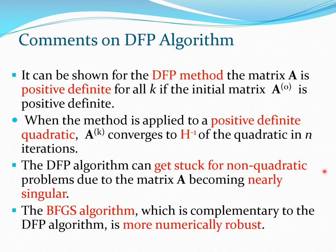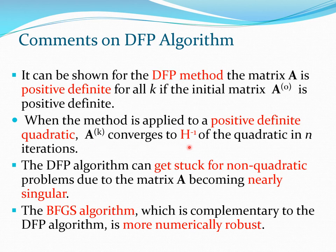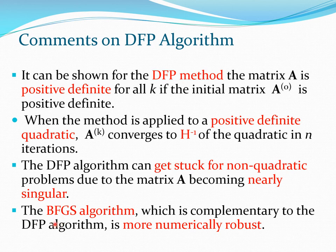For the DFP method, the matrix A remains positive definite for all k if the starting matrix is positive definite — guaranteed by choosing A0 = I. When applied to a positive definite quadratic function, Ak becomes the exact inverse of H at step n. The DFP method can get stuck for non-quadratic functions if A becomes nearly singular. In general, the BFGS method, which is complementary to DFP, is more numerically robust and is theoretically somewhat preferred.